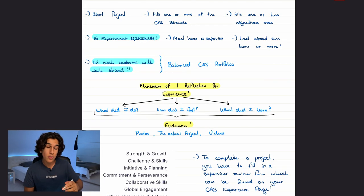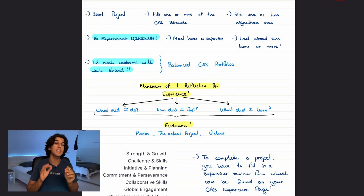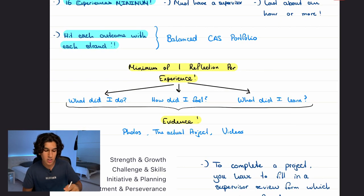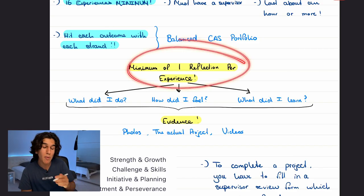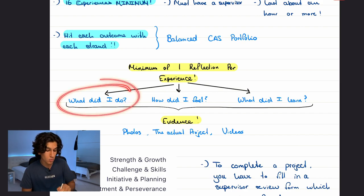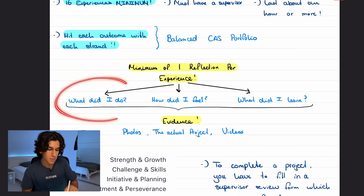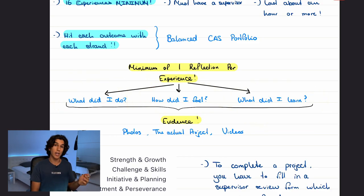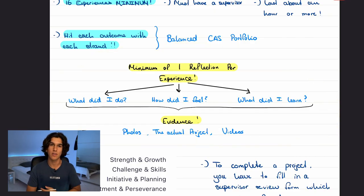Once you've chosen a CAS experience, you need at least one written reflection per experience alongside accompanying evidence. When writing your reflection, answer three things: What did I do? How did I feel when I did it? And what did I learn? That's what the IB wants to see. Feel free to screenshot this mind map and refer to it when writing your CAS reflections.